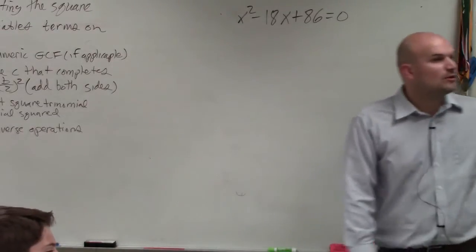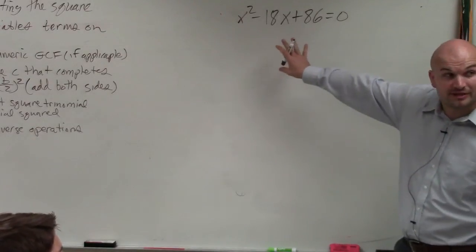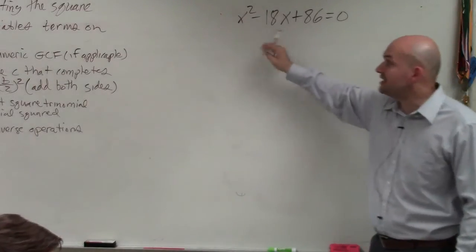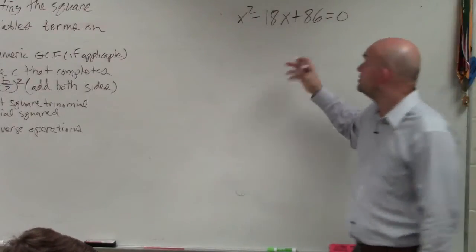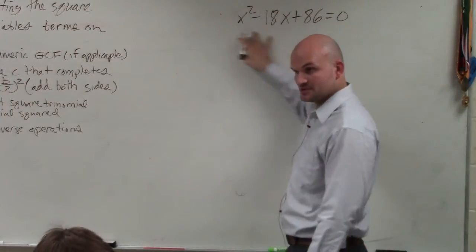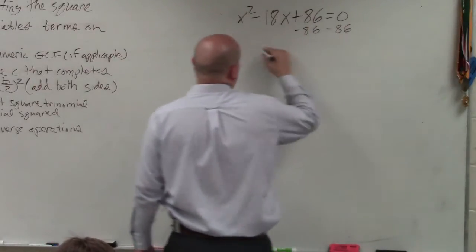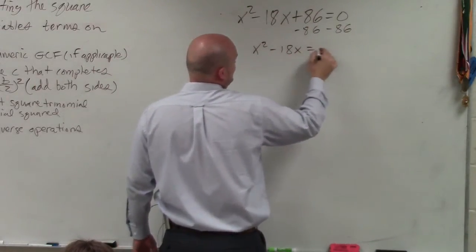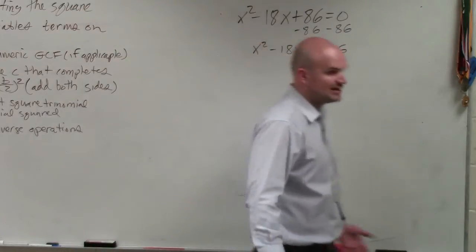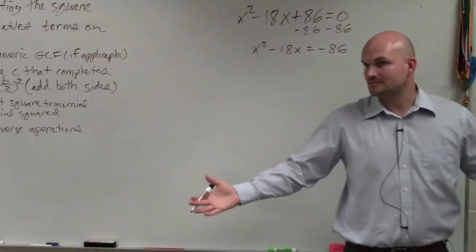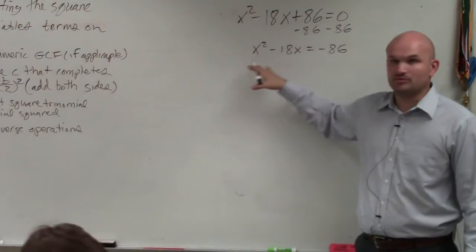The first thing I'd like you guys to do in solving a quadratic equation by completing the square is, again, isolate my variable terms. So I'm just going to get the variables on one side. So I'll subtract 86. x squared minus 18x equals negative 86. Does everybody follow me? Got it. I isolated these. Now all my variables are on one side.